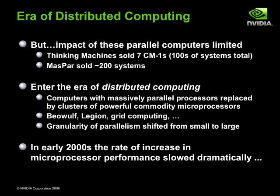What happened was that these large, expensive machines were displaced by clusters of cheap PCs, such as Beowulf clusters. The reason for this shift is that microprocessors had an economy of scale, which resulted in them becoming fast — faster than the supercomputer companies could compete with. As a result, parallel computing transitioned from machines with massively parallel processors to large clusters of machines with microprocessors.